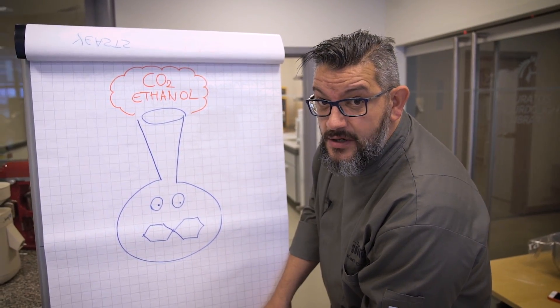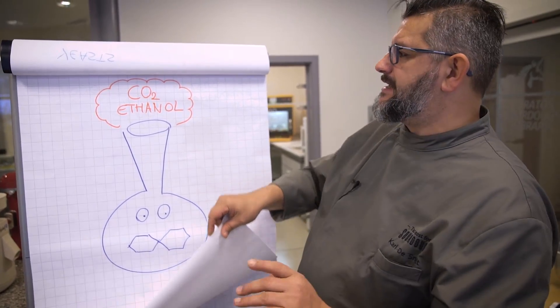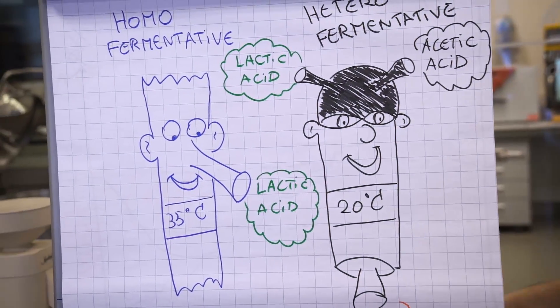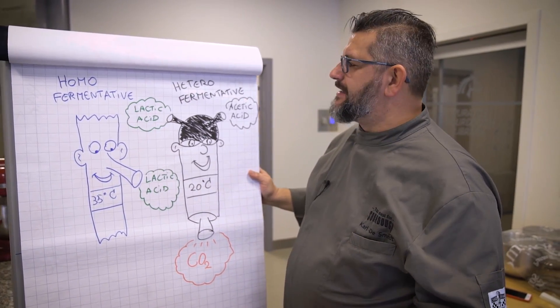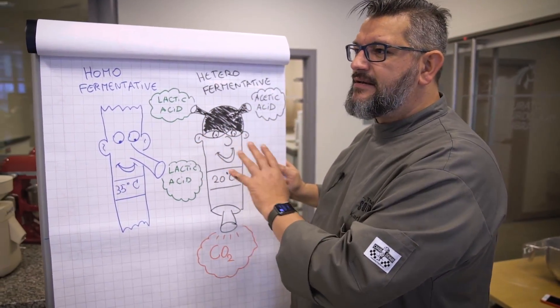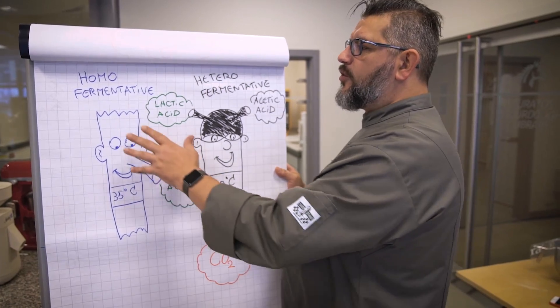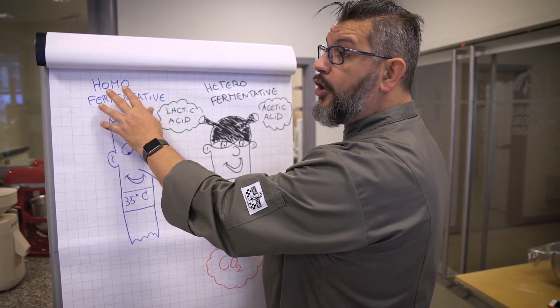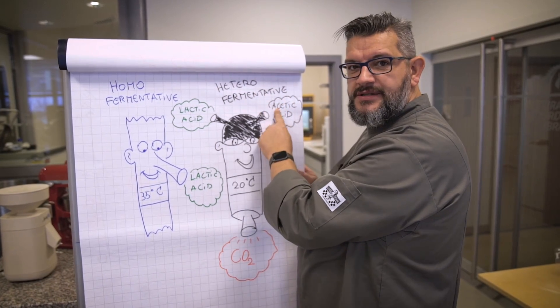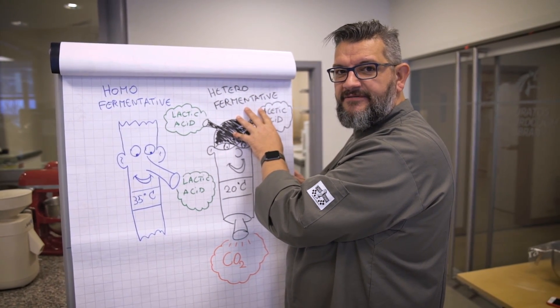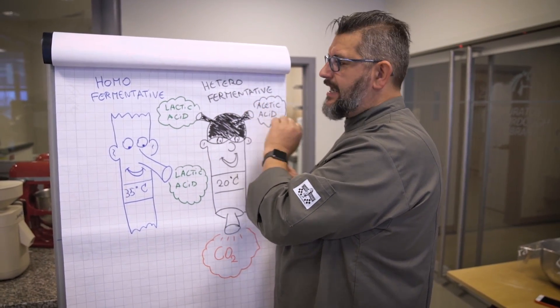On the other hand, we have the lactic acid bacteria, and don't be scared, but within the family of the lactic acid bacteria, there are two species, two main families. One are the homofermentative lactic acid bacteria, the other ones are the heterofermentative lactic acid bacteria.